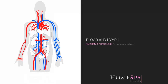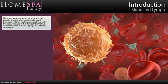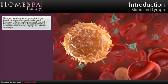Anatomy and Physiology for the Beauty Industry – Blood and Lymph. There are many treatments we perform in our industry that stimulate the circulatory and lymphatic systems, creating various effects within the body. Because of this, it is essential that we understand the function and properties of blood and lymph.